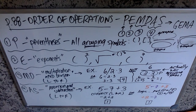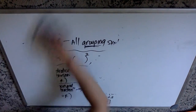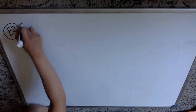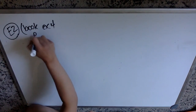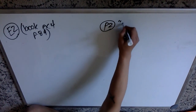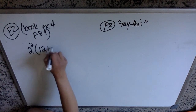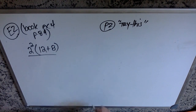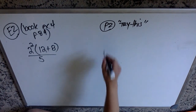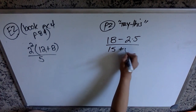We're going to do an E2 and a P2 where I have you simplify some numbers. I'm actually going to steal the book's example four, which is on page 89. My E2 is: 2² × (12 + 8) divided by 5. My P2 is: (18 − 2 × 5) divided by (15 + 3 × −3).